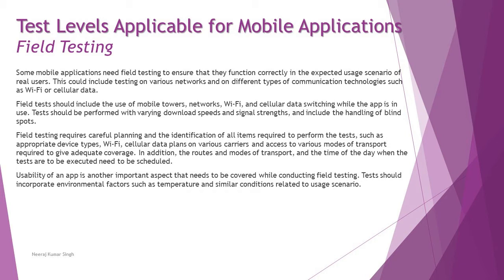Field testing, as the name suggests, requires a test engineer to walk out of the premises where the application is developed, with the app installed on a real device, to observe switches between different network types in reality — for example, switching from Wi-Fi mode to cellular data mode. This should not cause crashes or impact user experience, since real users do this regularly.